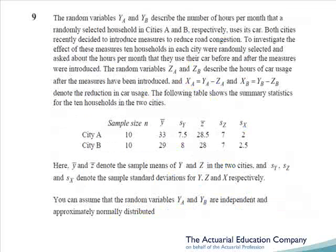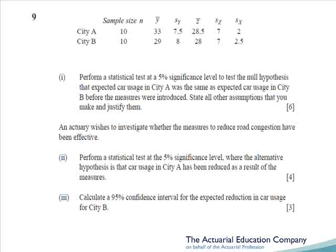Question nine is another confidence interval test question with a little bit of ANOVA thrown in. There's a lot of information given here, but essentially we're looking at the hours spent in a car before and after a road congestion scheme. Y is the amount before, Z is the amount afterwards, and X is the difference, i.e. the reduction in hours spent in the car. Part one asks us to perform a statistical test to see if the expected use in city A is the same as in city B before the measures were introduced — a two-sample t-test. Don't miss the marks for stating assumptions: normal distributions and equal variances.